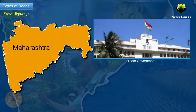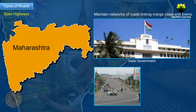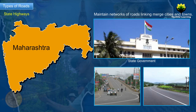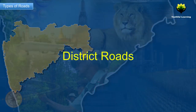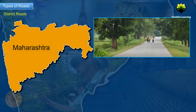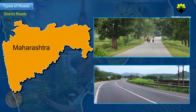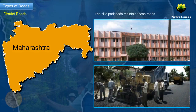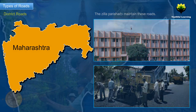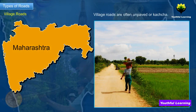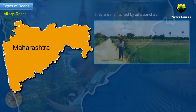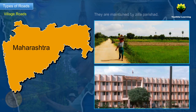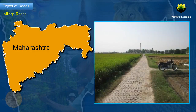State Highways: The state government builds and maintains a network of roads that links major cities and towns in the state. They are also linked to national highways and other important roads. District Roads link Talukas in the state and are also linked to national and state highways. The Zilla Parishads maintain these roads. Village roads are often unpaved or kaccha, maintained by Zilla Parishads. They play an important role in providing accessibility to remote areas in villages and also in the development of agriculture in rural areas.